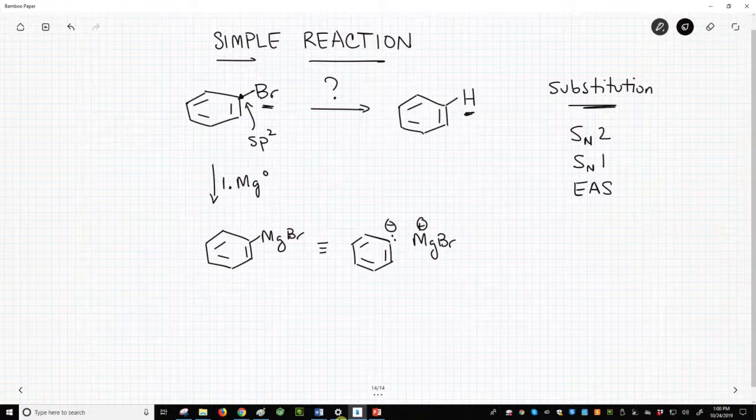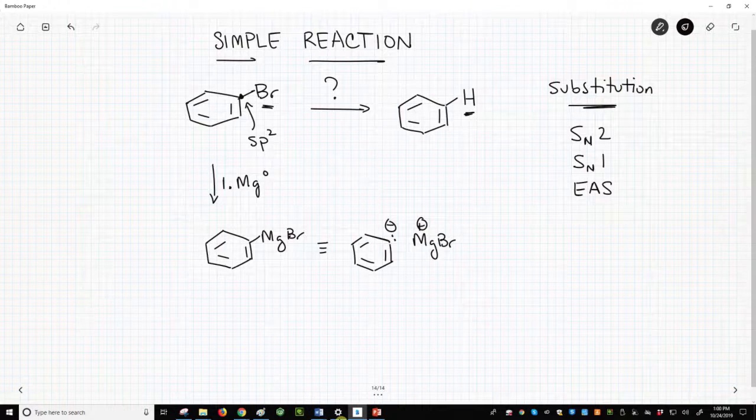Once this step is complete, we're ready to add an acid. Since organometallics like this Grignard reagent are strong bases, we want to use a weak acid. Water is perfect.